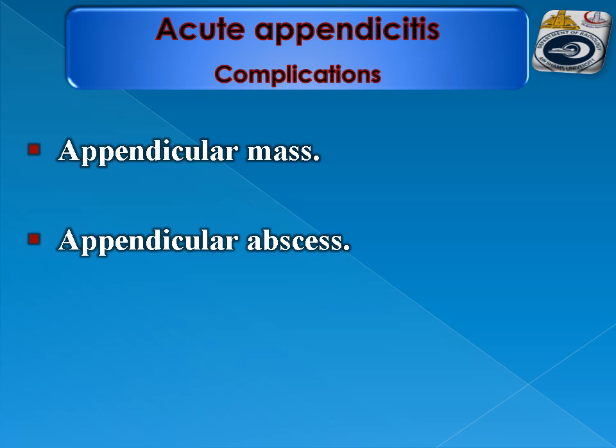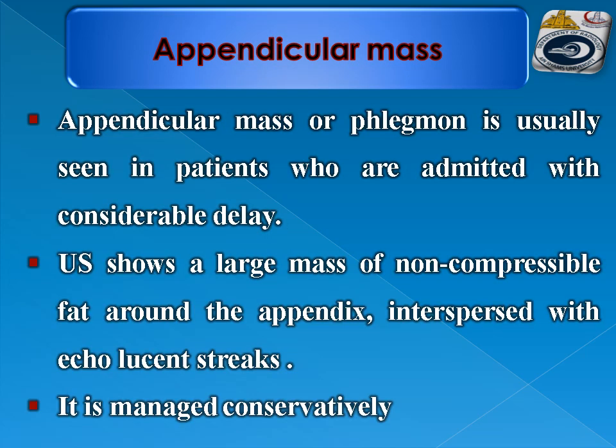Complications of acute appendicitis include appendicular mass and appendicular abscess formation. Appendicular mass, or phlegmon, is usually seen in patients admitted with considerable delay. Ultrasound shows a large mass of non-compressible fat around the appendix interspersed with echogenic streaks. It is managed conservatively — this is why it is important to diagnose it, because acute appendicitis is an indication for surgery, whereas appendicular mass is an indication for conservative management.